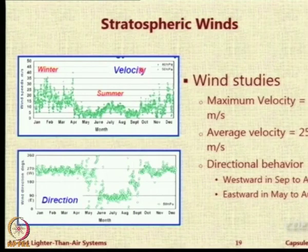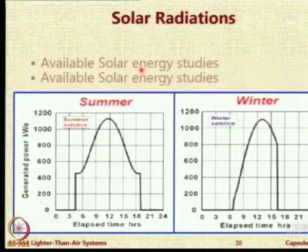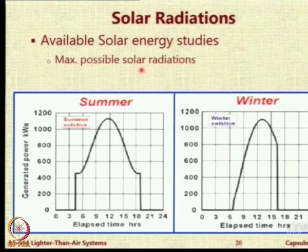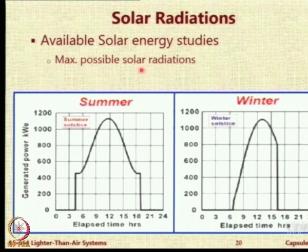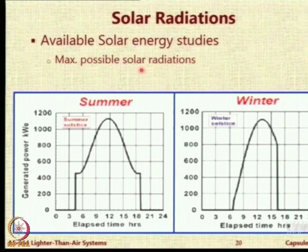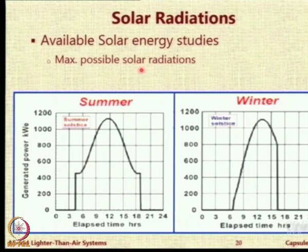Wind direction changes over the year — for some months it is in one direction and for other months in a different direction. To keep the airship operational for a longer period, such as a full year, you have to account for power availability in winter as well. Power availability is lower in winter and for shorter durations, so you must store power for longer periods since nights are longer. Power availability is higher in summer, so the energy storage system can be smaller, but in winter you must ensure sufficient stored power; otherwise the system will fail to provide power at night.